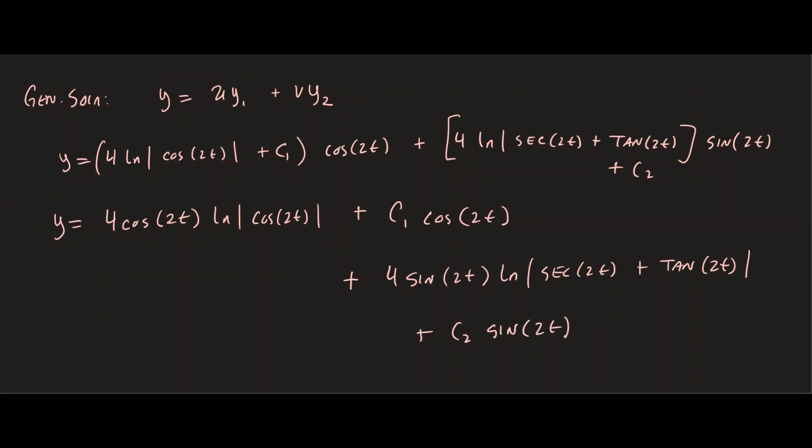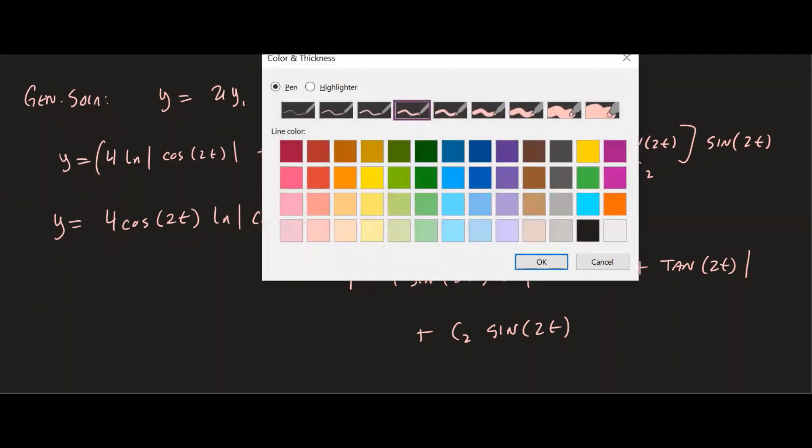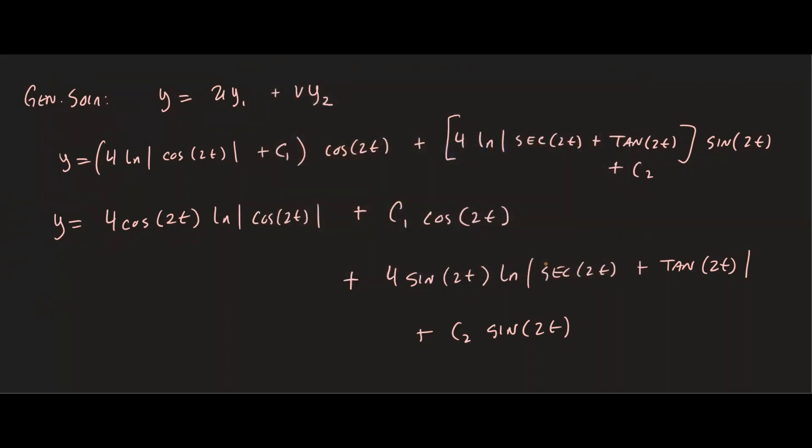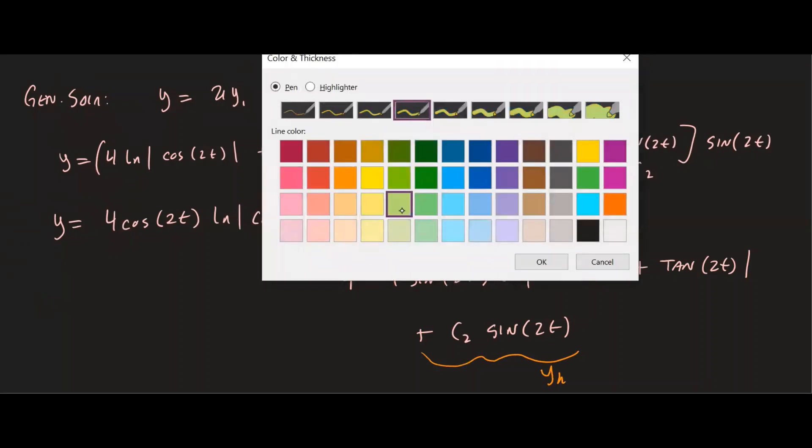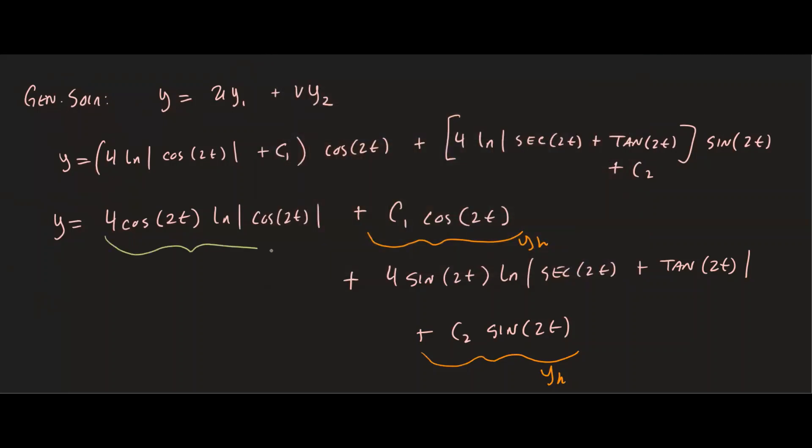Now you can simplify this a little bit more if you want, but I'm going to stop right here and show you where the homogeneous solutions are and the particular solution. If you notice this piece and this piece, these are the homogeneous solution. And then the remaining piece, which is this one and this one, these are the particular solution. So we have the general solution, particular plus the homogeneous, and we were able to obtain this by doing variation of parameters.